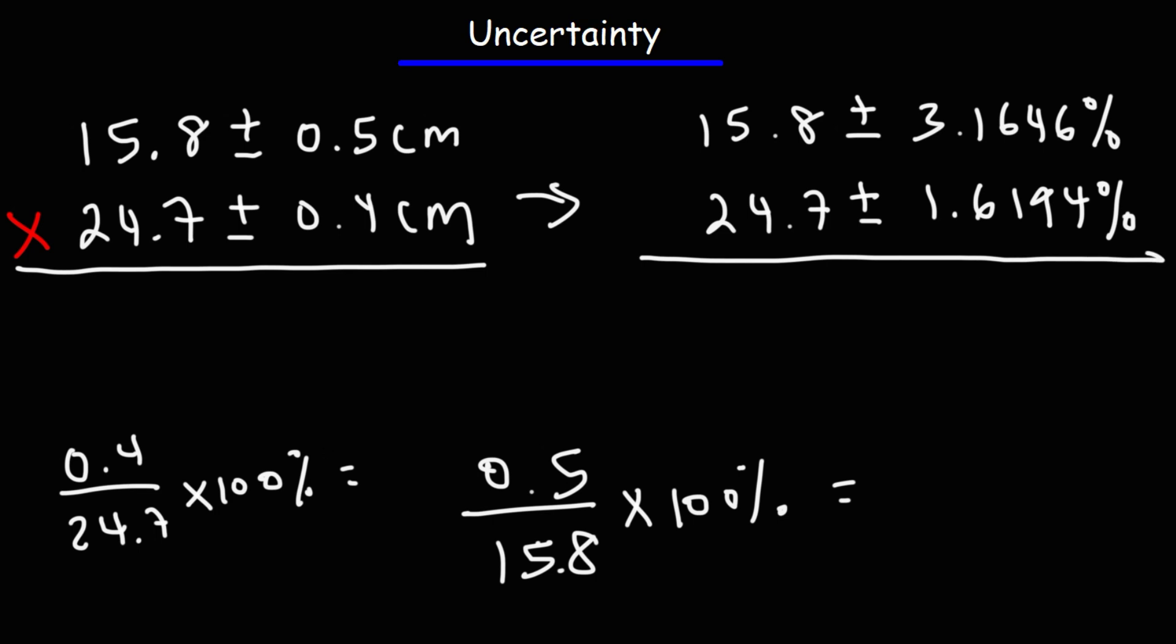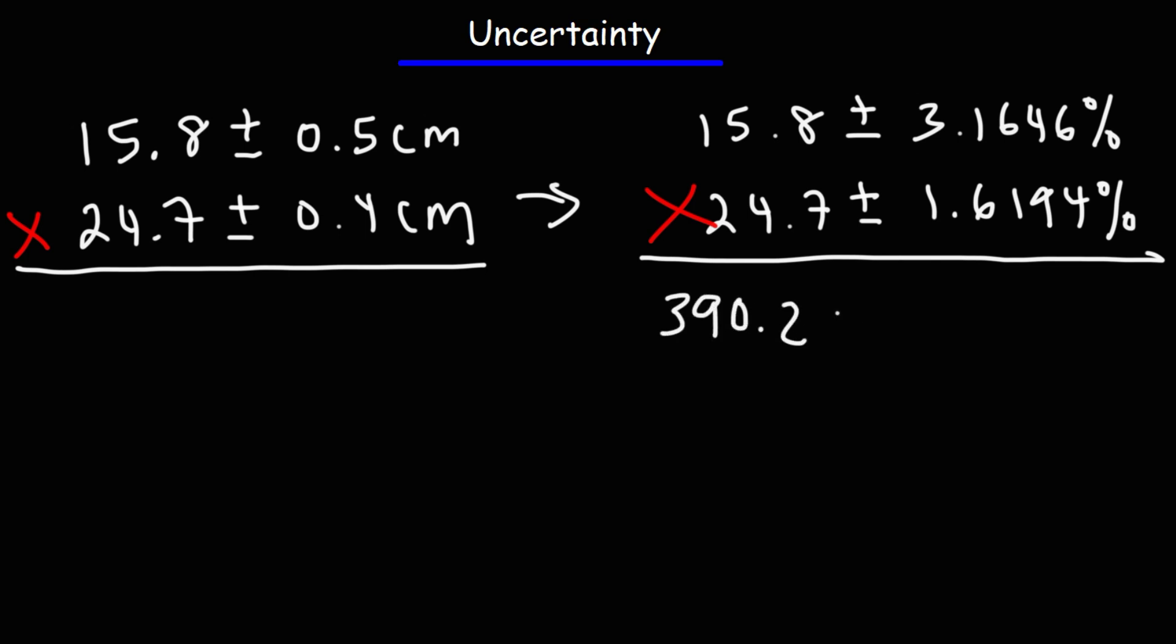All right, so now we're going to multiply these two numbers. So let's use a calculator to multiply 15.8 and 24.7. So that's going to be 390.26. Now, for the uncertainties, we're going to add them. We're not going to multiply them. For this to work, you need to add the percentages. So 3.1646 plus 1.6194, that's going to be 4.784%.